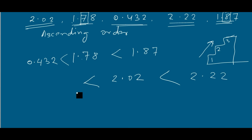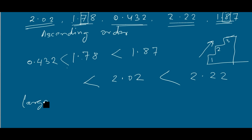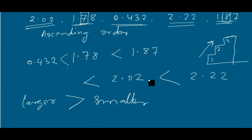So the rule is: first compare the whole part, then compare the tenths place, and if you find the comparison you stop. Move to hundredths and thousandths only if needed. For descending order, the concept is the opposite — the largest number is written first, then smaller numbers follow. If you reverse the ascending series, it becomes the descending order.